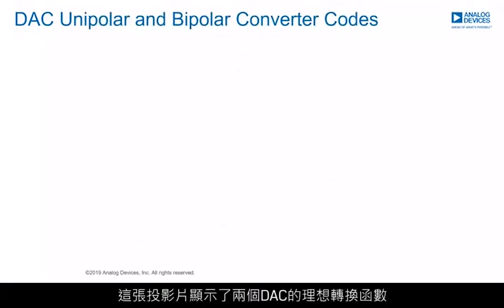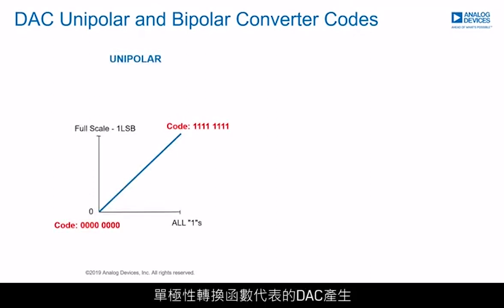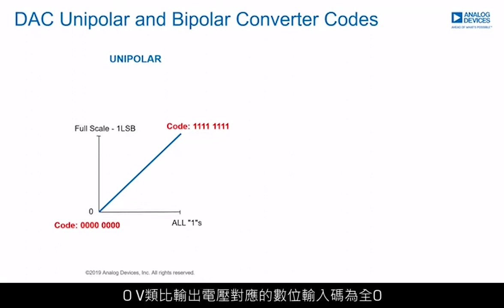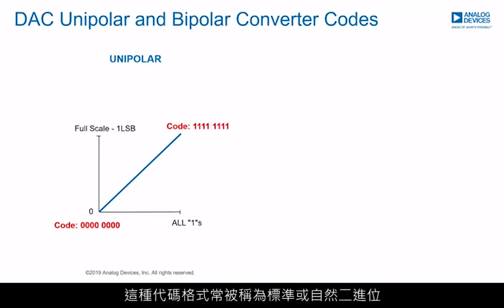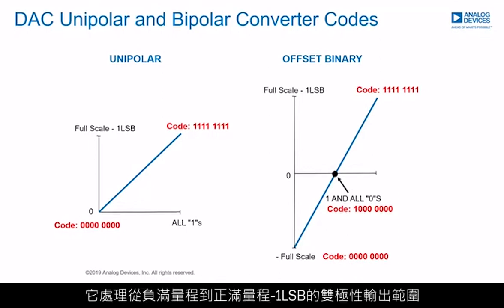This slide shows the ideal transfer function of two DACs with different digital code representations of an analog output signal. The unipolar transfer function represents a DAC which produces an analog output range from 0 to full-scale minus 1 LSB. The digital input code goes from all zeros for an analog output of 0V to all ones for an analog output of full-scale minus 1 LSB. This code format is often called straight or natural binary, and the number of discrete values depends on the resolution of the converter.